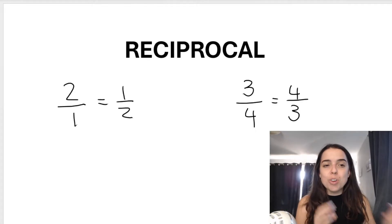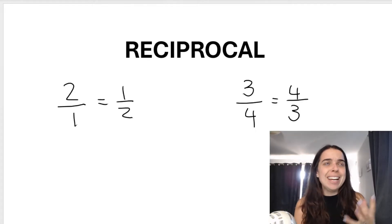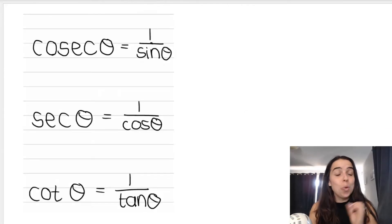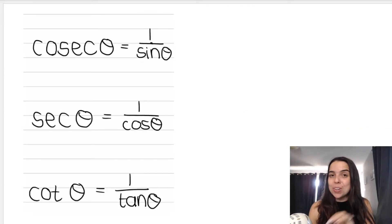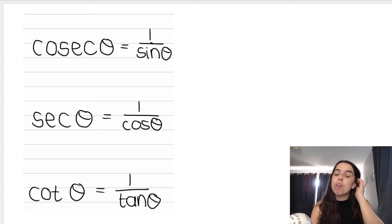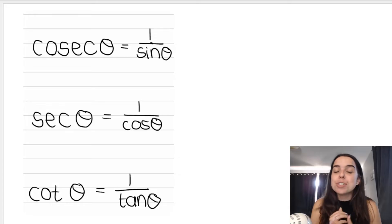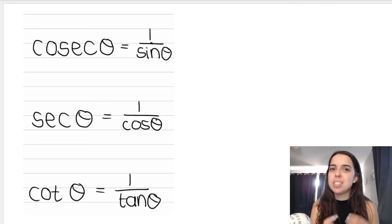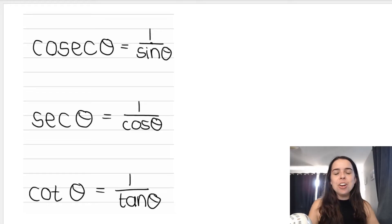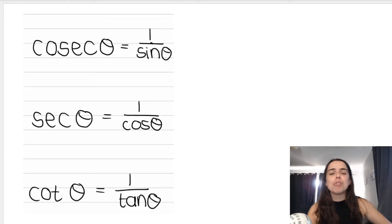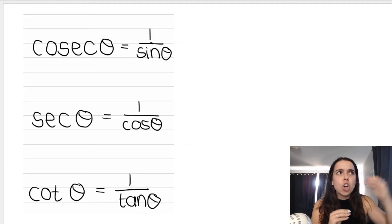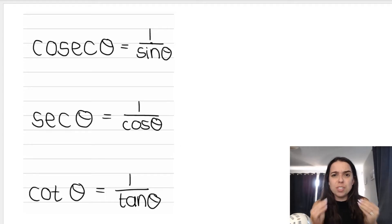Now the reciprocals of the trig ratios are really not that different. We'll be working with three reciprocals - they're the reciprocals of the basic trig ratios. We've got the reciprocal of sin, which is cosec; the reciprocal of cos, which is sec; and the reciprocal of tan, which is cot. Now I know a lot of students struggle with remembering how they know that cosec is the reciprocal of sin and sec is the reciprocal of cos.